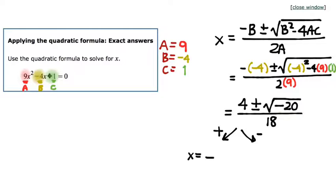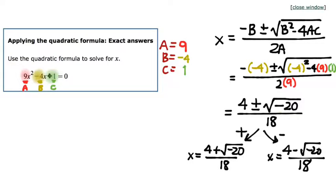Certainly can't argue with that. One solution is 4 plus the square root of negative 20 over 18. The other solution is 4 minus the square root of negative 20 divided by 18. That is a totally correct answer, a totally correct solution of this quadratic equation. We could continue forward and do that simplification step.